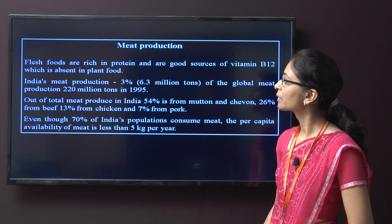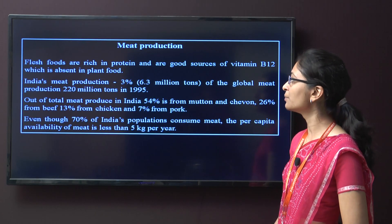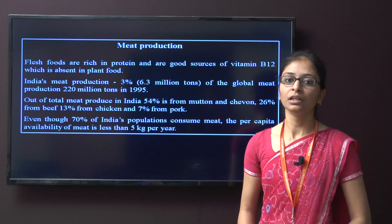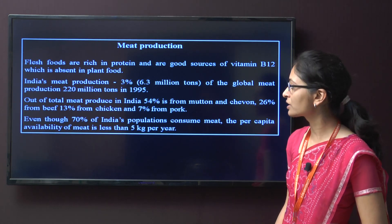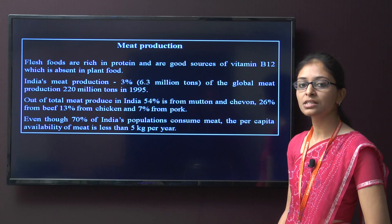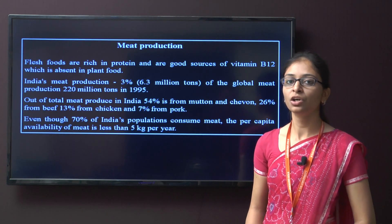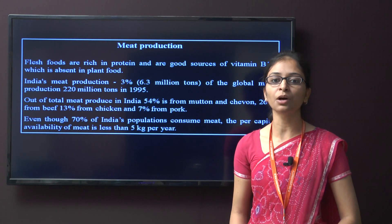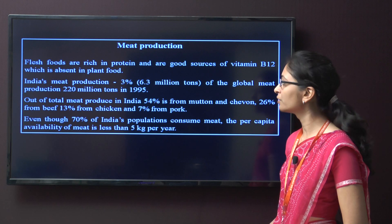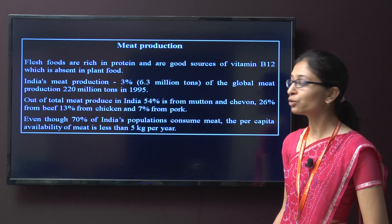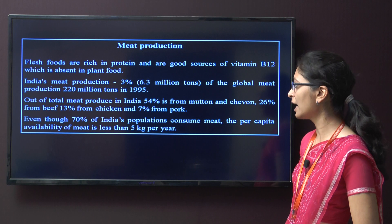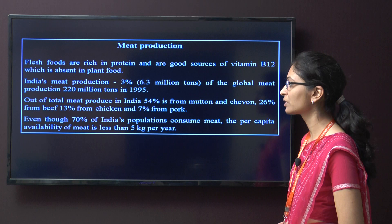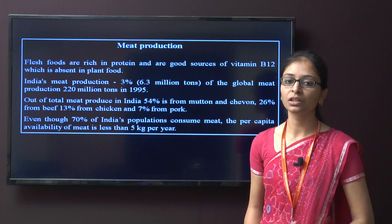Flesh foods are rich in protein and are a good source of vitamin B12, which is absent in plant food. India's meat production is around 3 percent, which is 6.3 million tons, of the global meat production of around 220 million tons in 1995. Out of the meat produced in India, 54 percent is from mutton and chevon, 26 percent from beef, 13 percent from chicken, and 7 percent from pork.